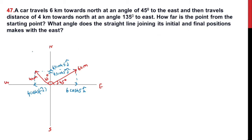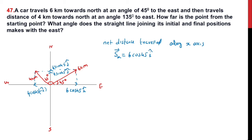Now let's find the net distance along each axis. The net x-component Sx is equal to 6 cos 45 (i-cap) minus 4 cos 45 (i-cap), which equals 2 × (1/√2), giving us √2 i-cap.